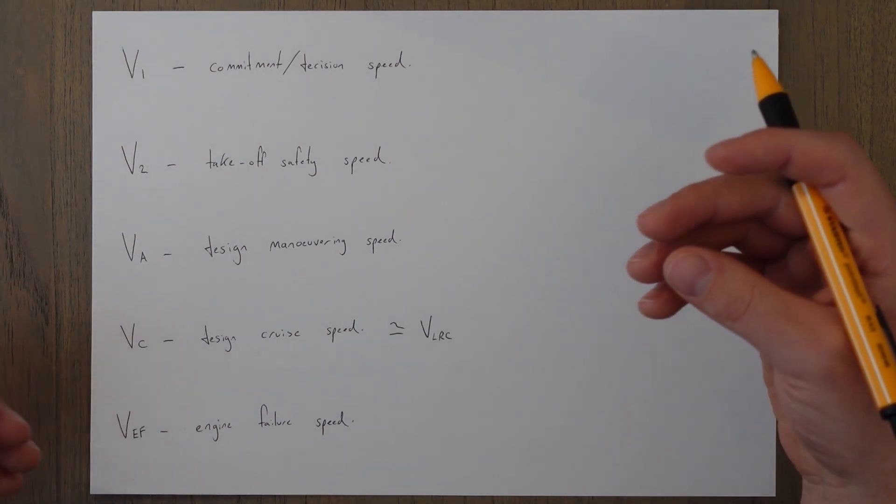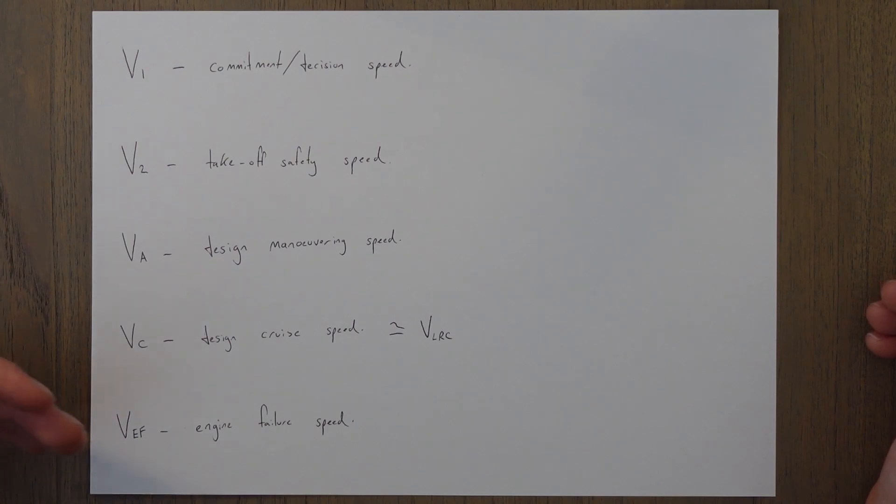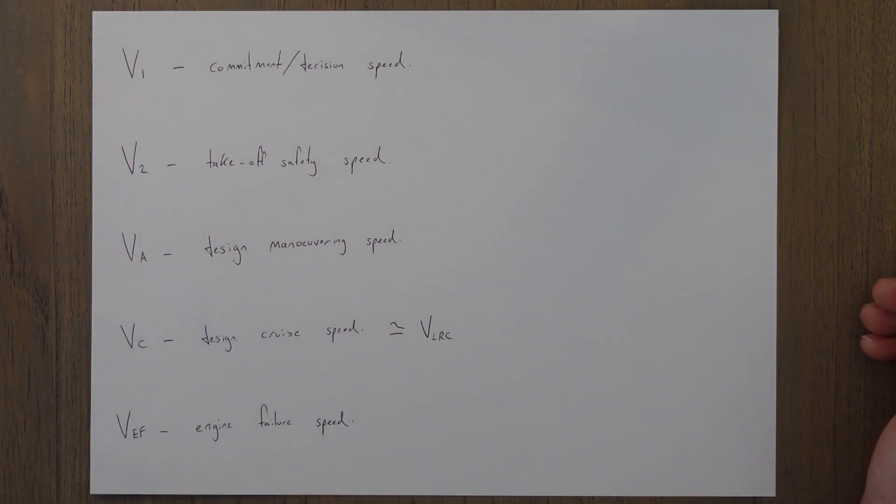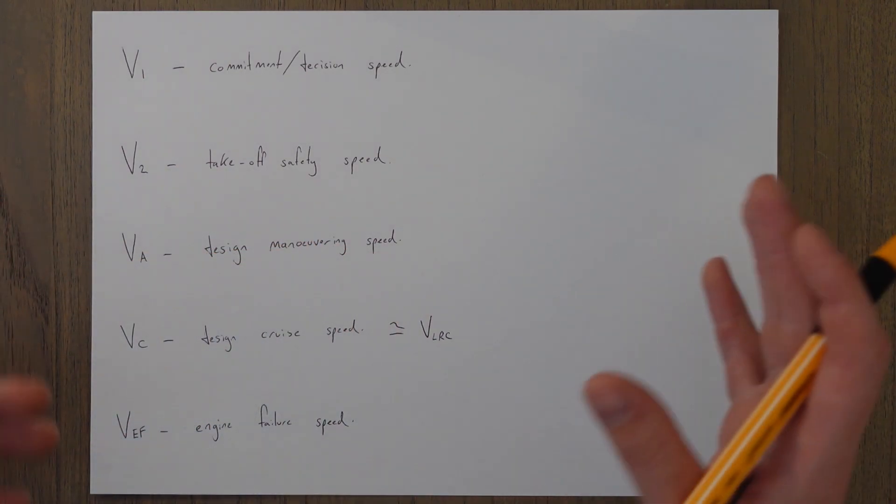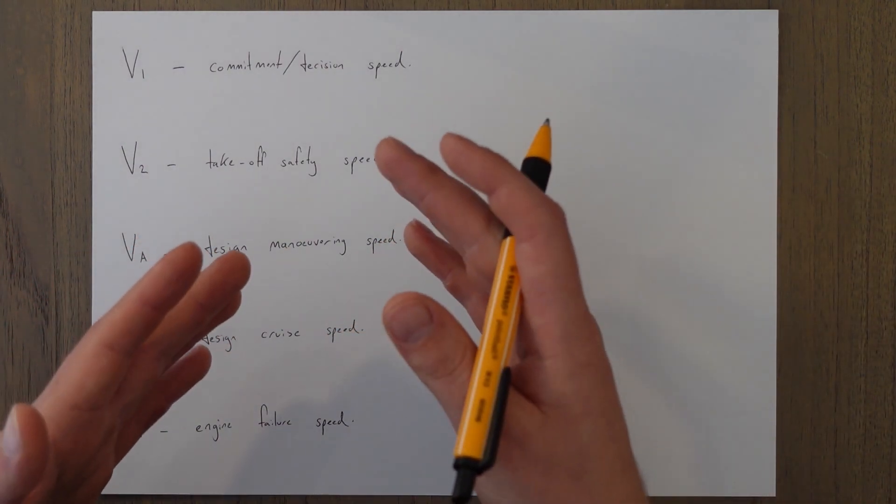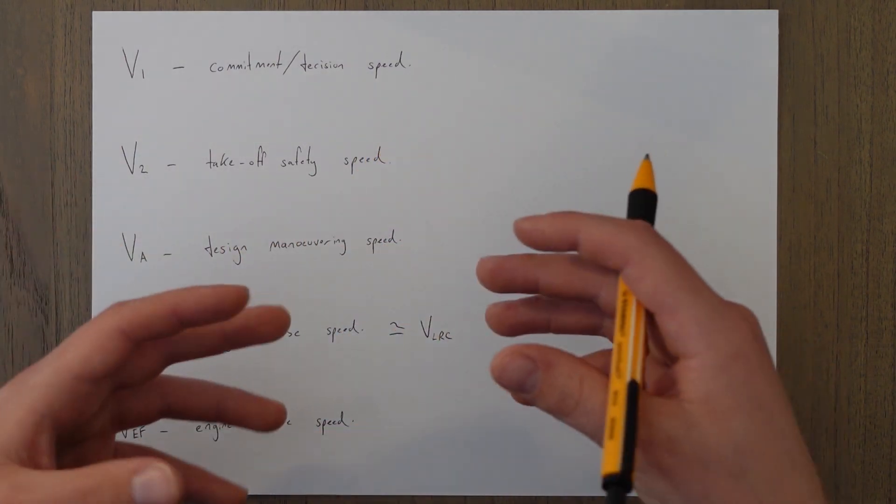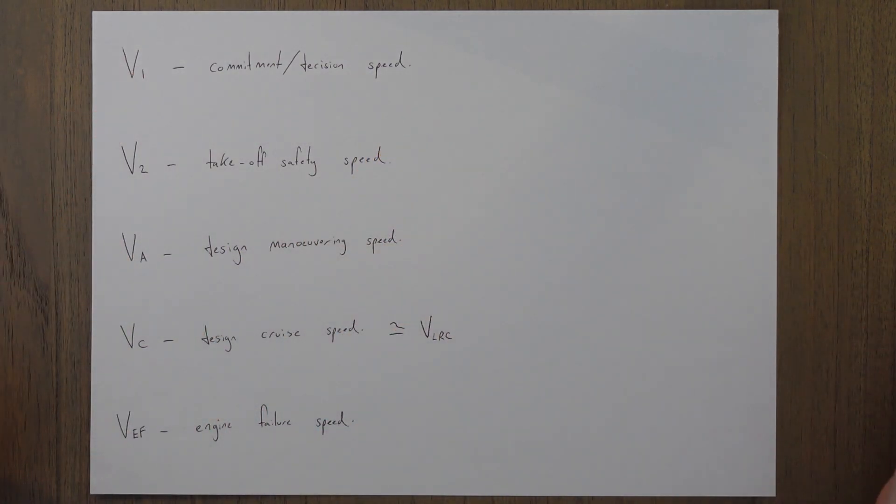VEF is the speed at which the critical engine is assumed to fail during a takeoff for calculation purposes and for Class A regulation purposes. VEF has to be slower than V1 as it is a speed where we have enough time to recognize the engine failure before V1. It's not just any speed that an engine failure occurs at, it's a speed basically just a little bit before V1 that will allow us to recognize and make the decision to either stop or go at V1.